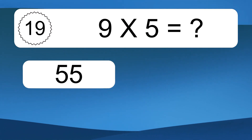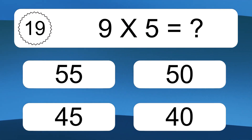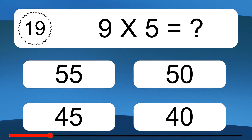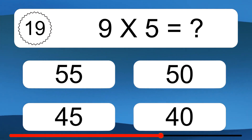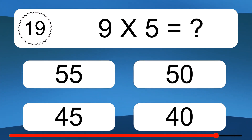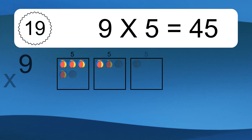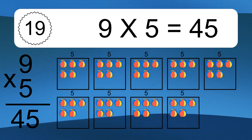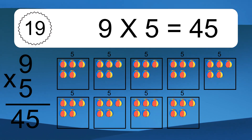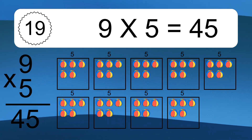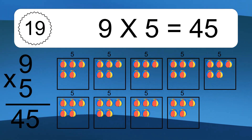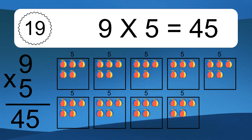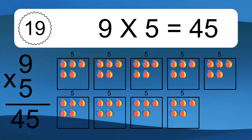9 times 5 equals what? 9 times 5 equals 45. We have 9 boxes, and each box has 5 colorful balls inside. If you count all the balls in all the boxes together, you will have 9 times 5 balls. This equals 45 balls.